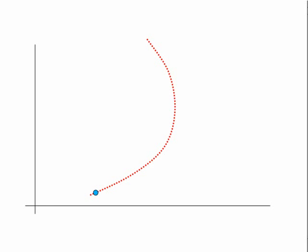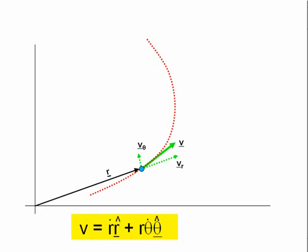Let's now look at the interpretation of acceleration in polar coordinates from a geometrical point of view. A particle is moving along a curved path as shown. R is its position vector. We know that the instantaneous velocity v is given by: v equals r-dot r-hat plus r theta-dot theta-hat, where r-hat and theta-hat are the radial and tangential unit vectors respectively.